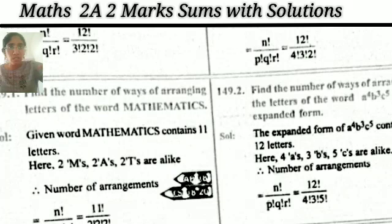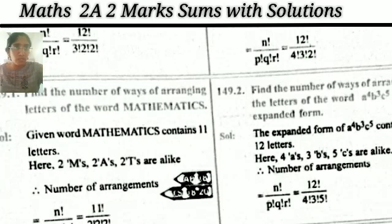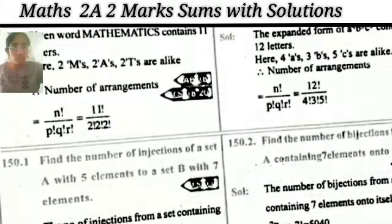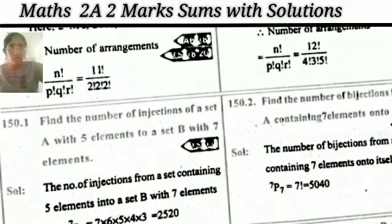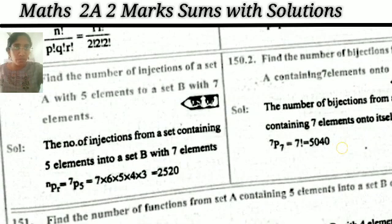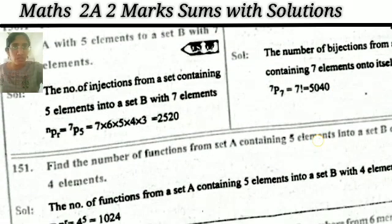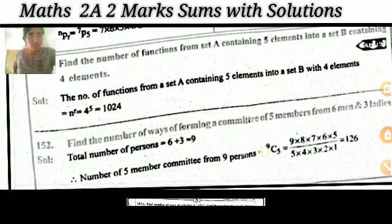Find the number of ways of arranging the letters of the word MATHEMATICS. This follows the same model. Also: find the number of bijections from a set containing seven elements into itself, and find the number of functions.